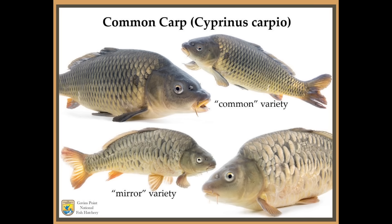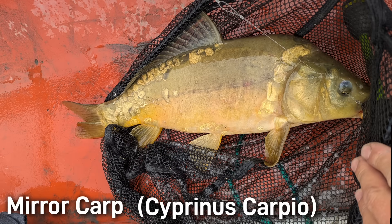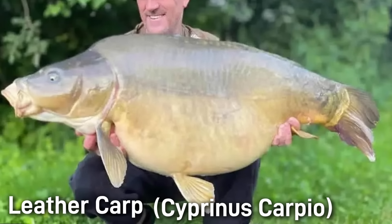The mirror carp is a variety of common carp that is easily recognized by its patchy and irregular scale pattern. Despite its unique look, this isn't a separate species, but rather a genetic mutation that is hereditary among common carp. The leather carp is a common carp without any scales at all, and the idea is the same.